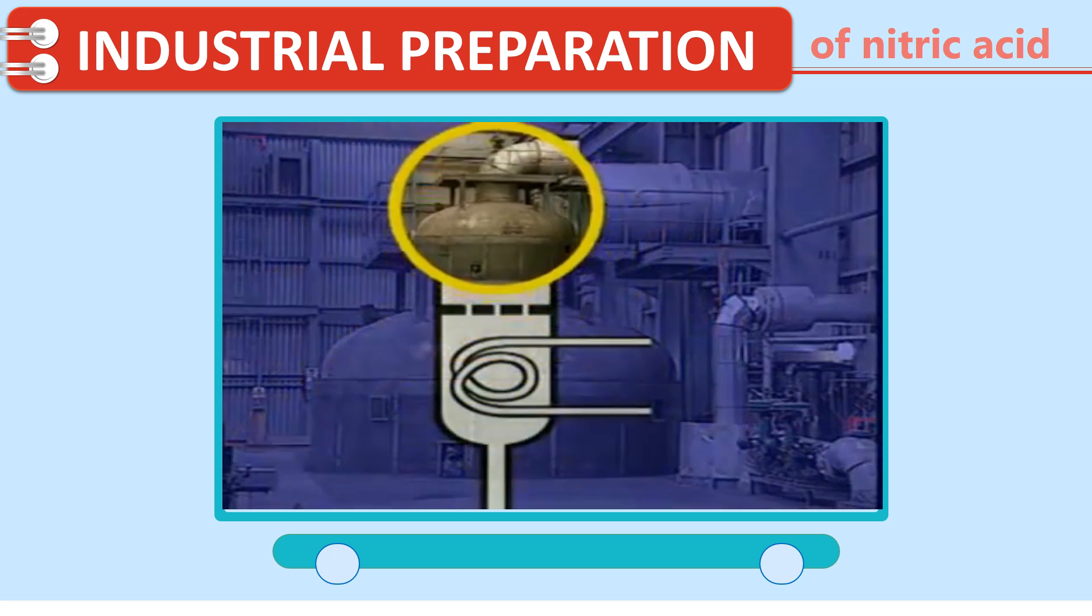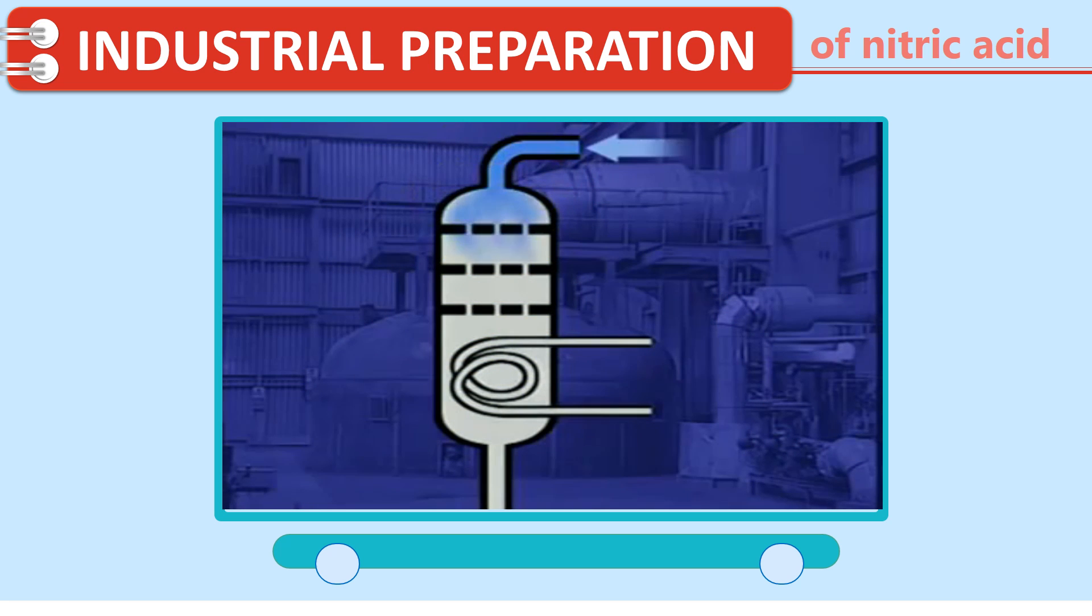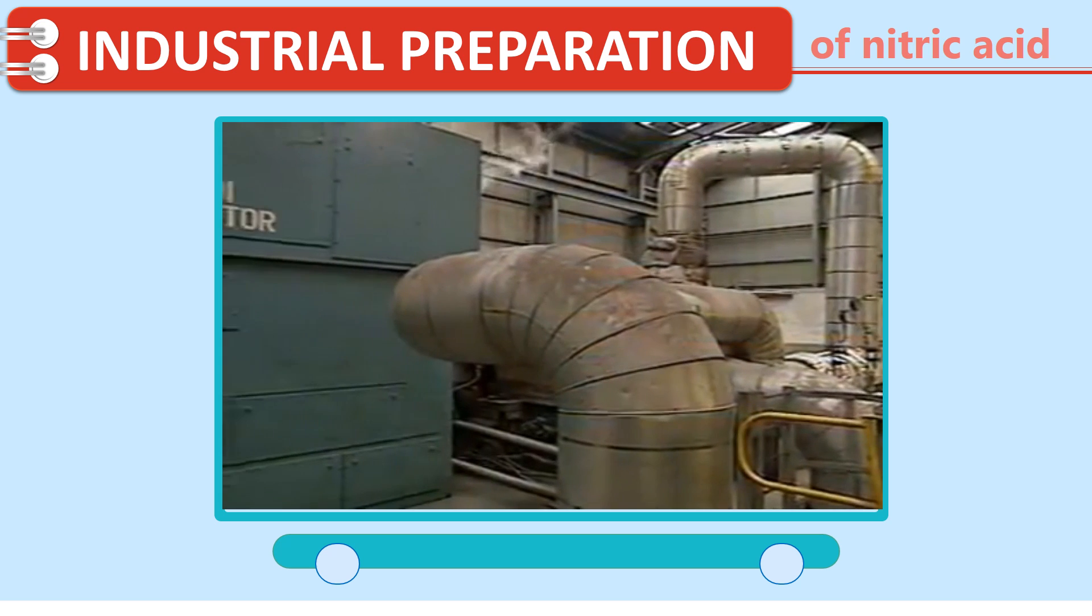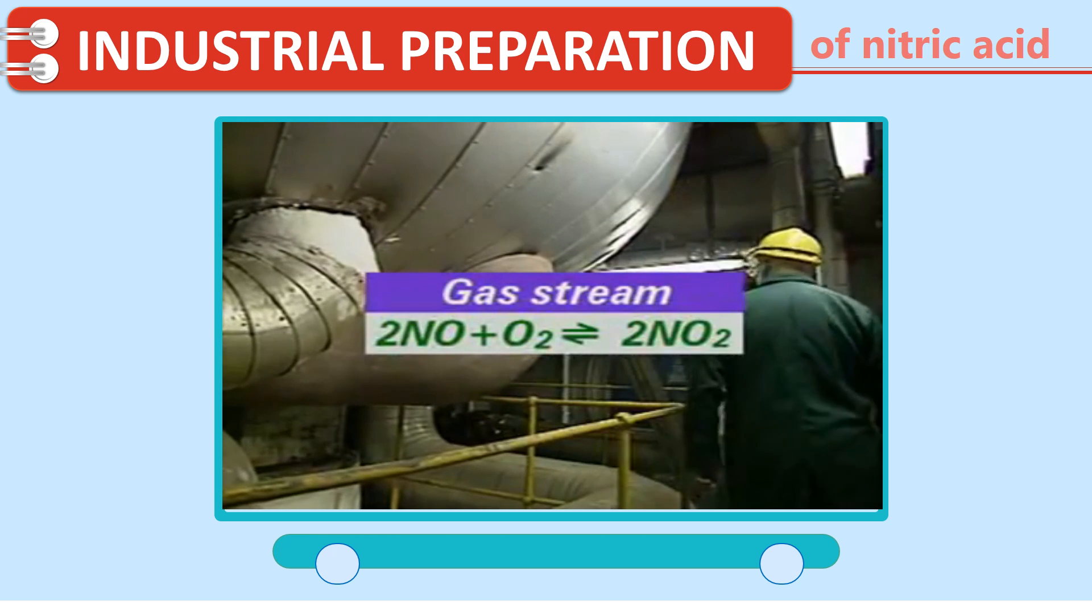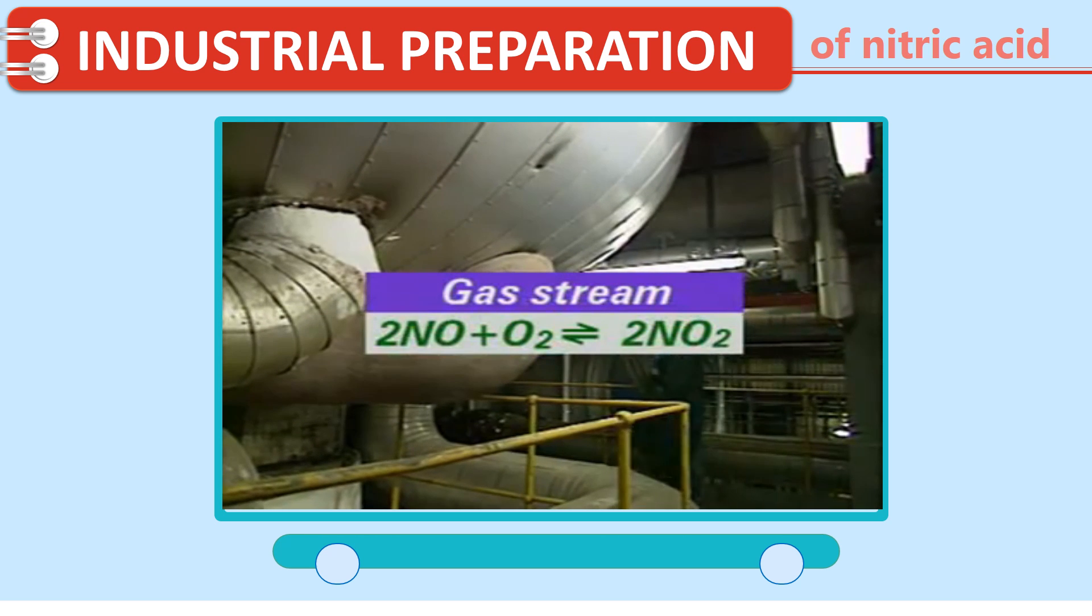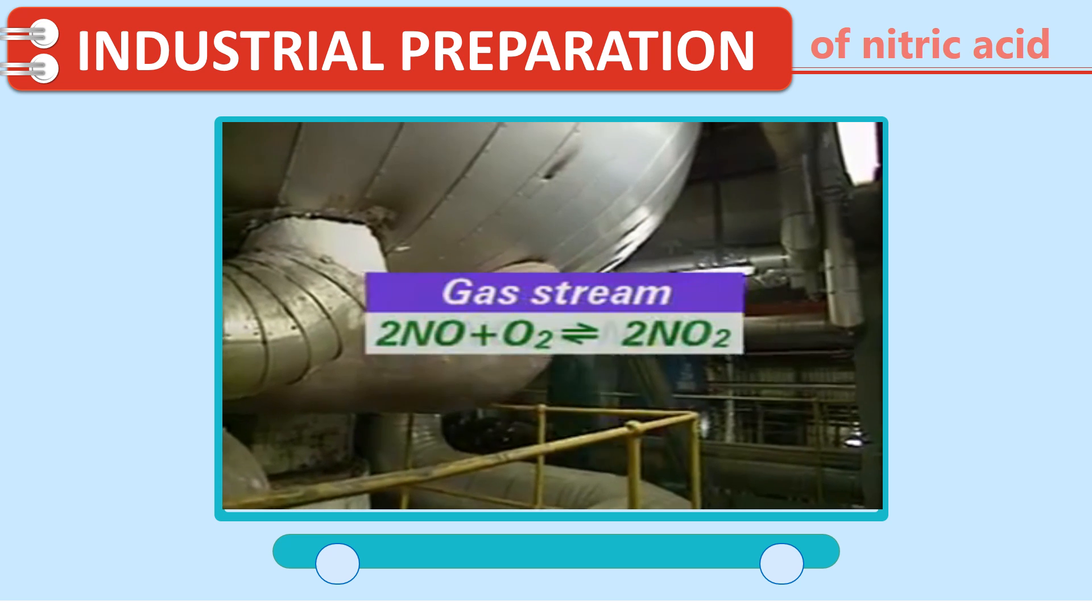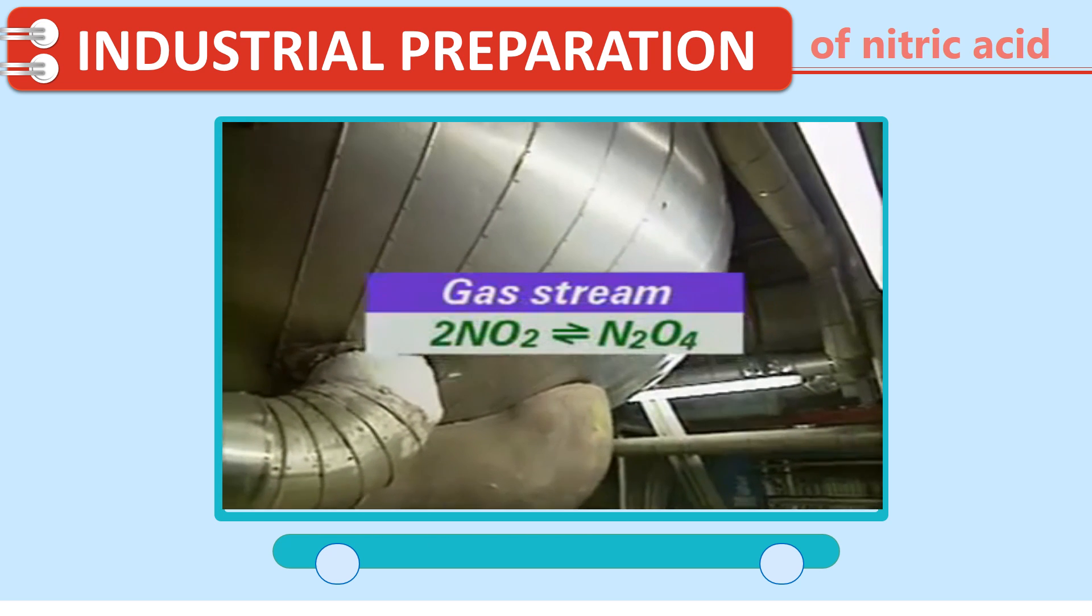The reaction in the converter produces heat. The gas stream leaving the converter is cooled by water. This produces steam which is used to drive a generator. In the gas stream, the nitrogen monoxide is oxidized by excess oxygen to a mixture of nitrogen dioxide and dinitrogen tetroxide.